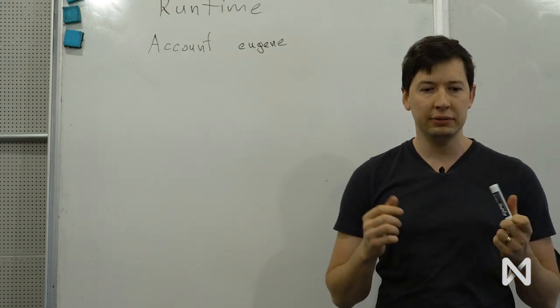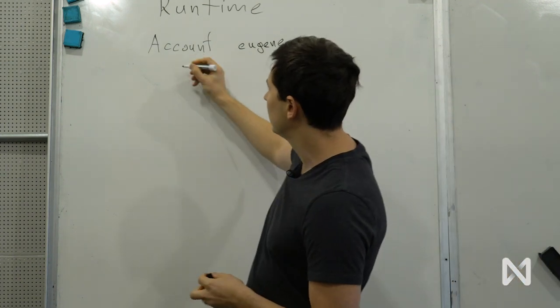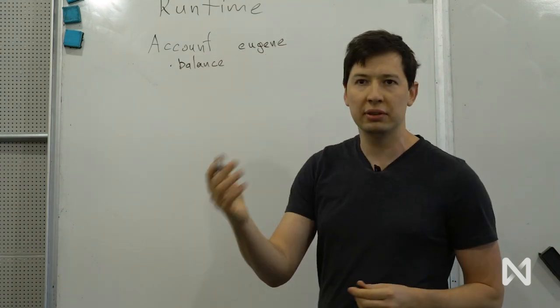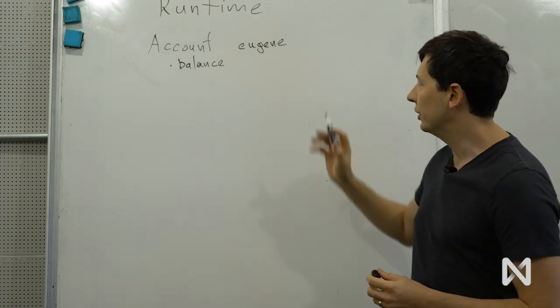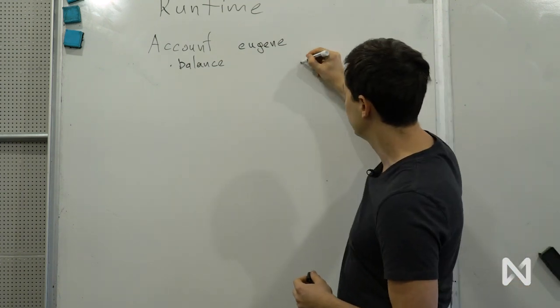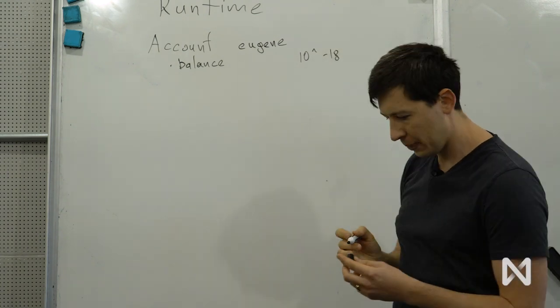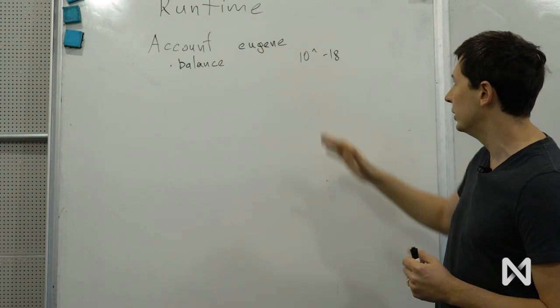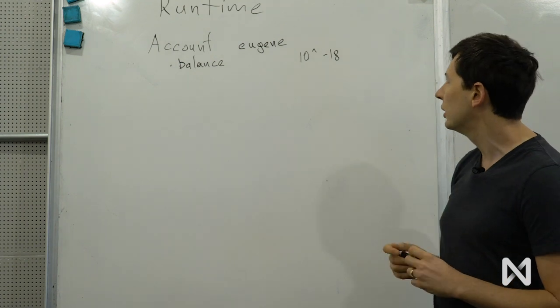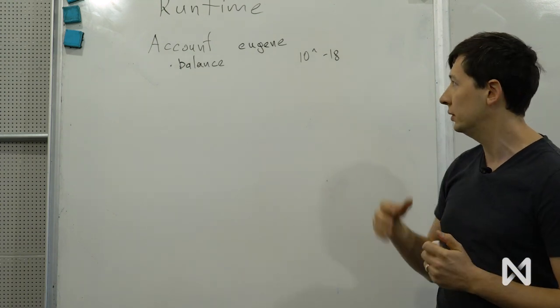Within the account, we have different types of fields. Account usually has a balance, and balance indicates the number of tokens the account holds. Tokens are measured in attonear, and attonear is 10 to the minus 18 of a single NEAR. We do this to keep the balance as an integer so it's not a floating point. Attonear is the smallest unit that we have for the token.